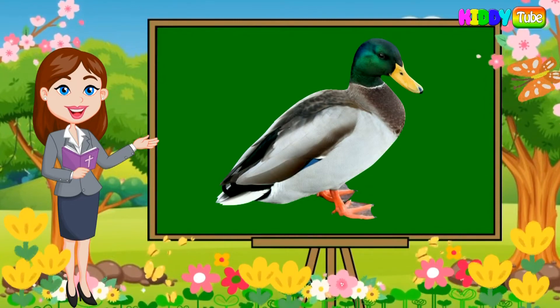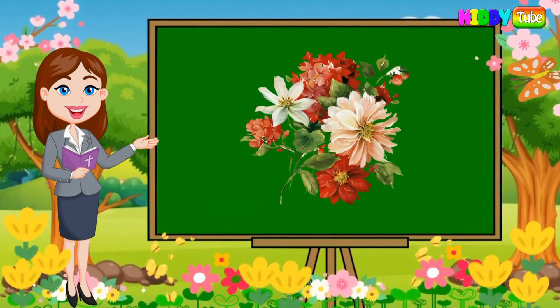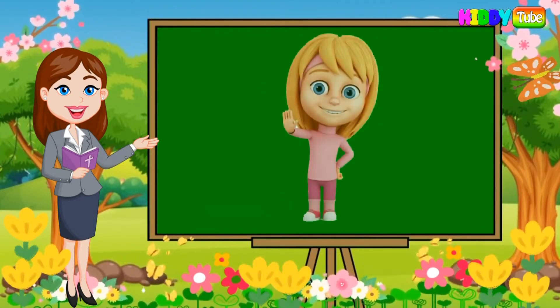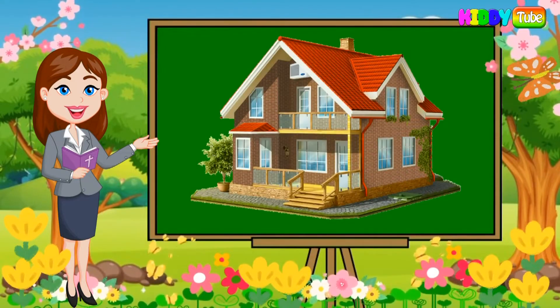D is for duck, E is for egg, F is for flowers, G is for girl, H is for house.